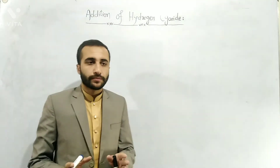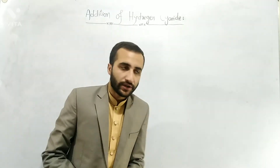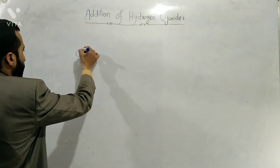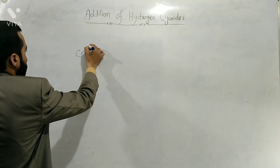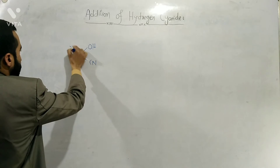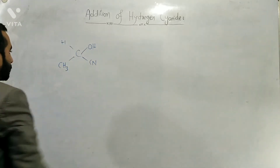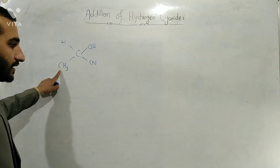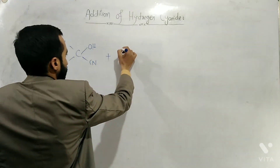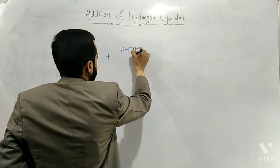The fourth question: how is acidic hydrolysis carried out? Suppose we have acetaldehyde cyanohydrin — with an OH group and a CN group on the alpha carbon — and we perform acidic hydrolysis on it.